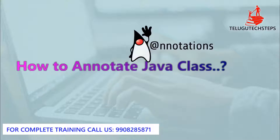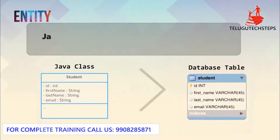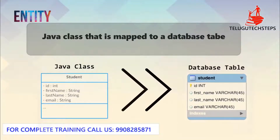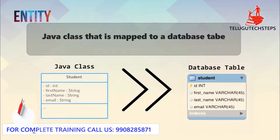We will use this annotation. That is the entity class — the entity class that is mapped with a database table. What is the Java class? It is a database table map. We are going to see the entity class.